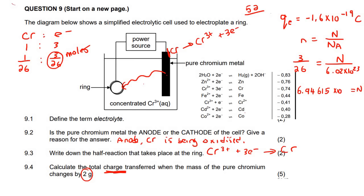we should get the number of electrons as 6.94615 × 10²². That's how many electrons we have.